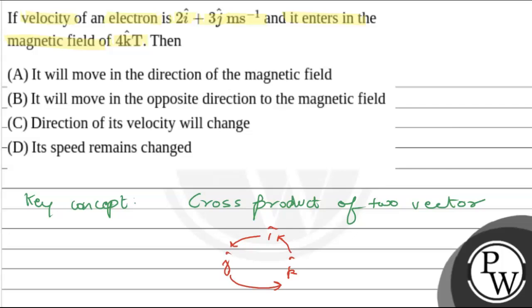That is, if i-cap cross product with j-cap, it is anti-clockwise, so it will be positive k-cap. But if i-cap cross product of k-cap, it is clockwise, so it will be minus j-cap.